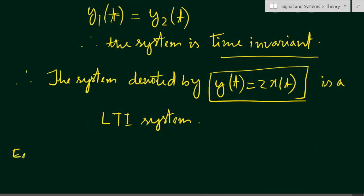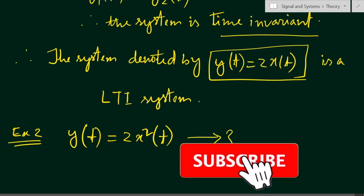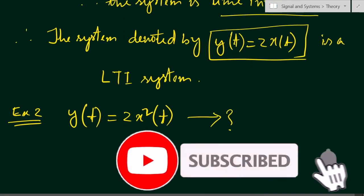As a homework, example number two: suppose the system is y(t) = 2x²(t). In the comment section, you have to say whether this system is an LTI system or not. Thank you for watching. If you have any questions, please put them in the comment section below. Also like, share, and subscribe to my channel. Thank you.